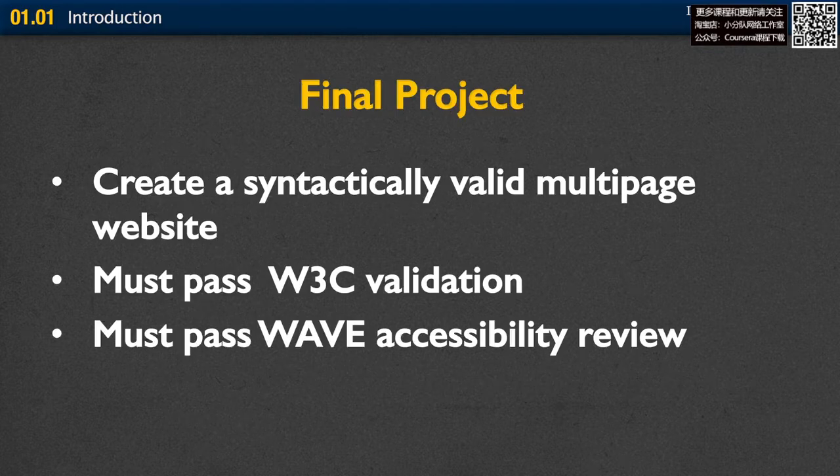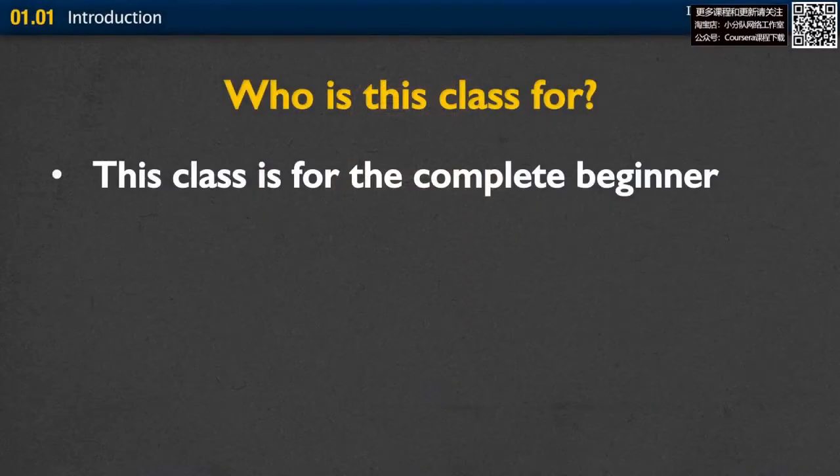Finally, we'll work on a final project where you will put together a lot of different things you've been learning. You are going to create what we call a syntactically valid multi-page website — your site will have at least two to three pages. After you've done your coding, you'll run it through validation to make sure it's accessible. Your final project is actually going to be something that's a little bit ugly, because we're not talking about styling. I really just want you to understand the HTML5 language, and that's all about content.